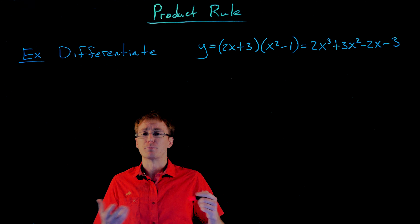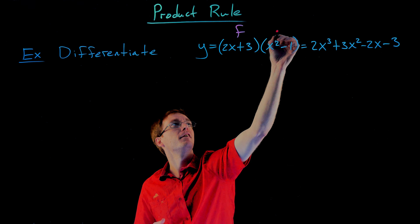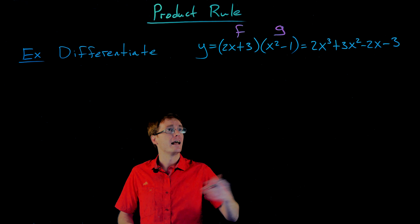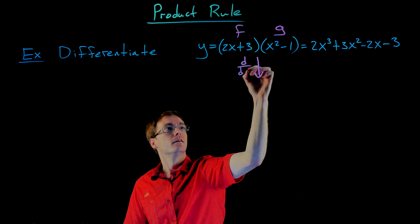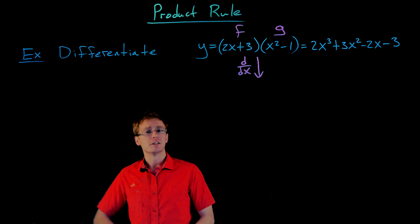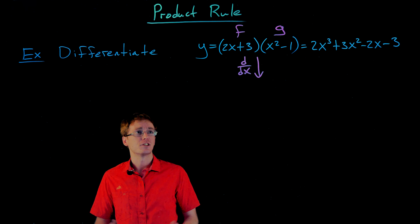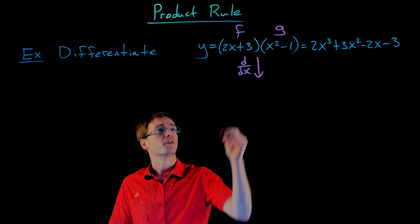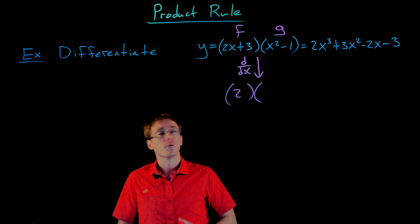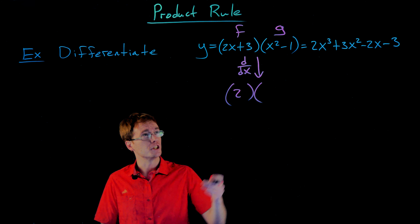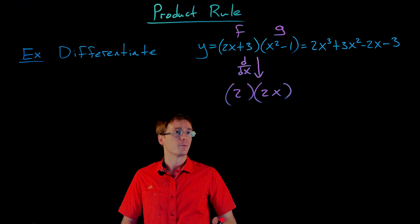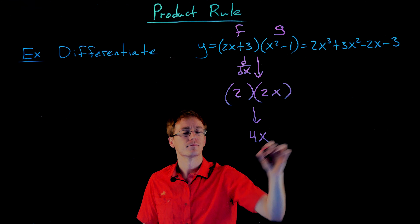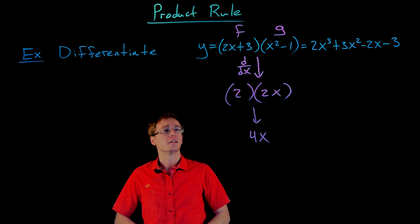We can think of our function as the product of two functions — f equals 2x plus 3, and g equals x squared minus 1. If we differentiate each factor with respect to x, the derivative of f is 2, and the derivative of g is 2x. Multiplying those together gives us 4x, so it might appear the derivative should be 4x. But we're going to see that is not the case — this is the incorrect way to take the derivative.